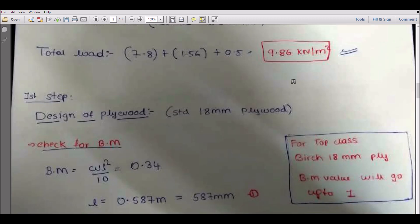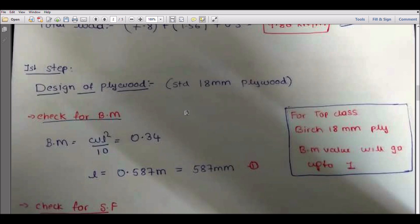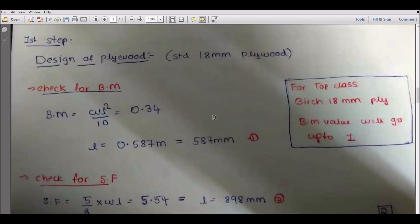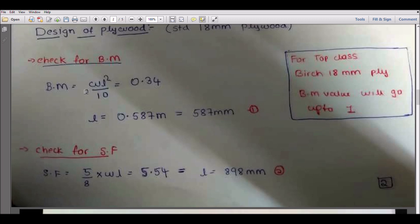We have the bending moment formula, so W·L² divided by 10. This bending moment value is 0.34. We have to calculate length from it. So 9.86 into L² divided by 10, which is equal to 0.34. The L value will be around 587mm.